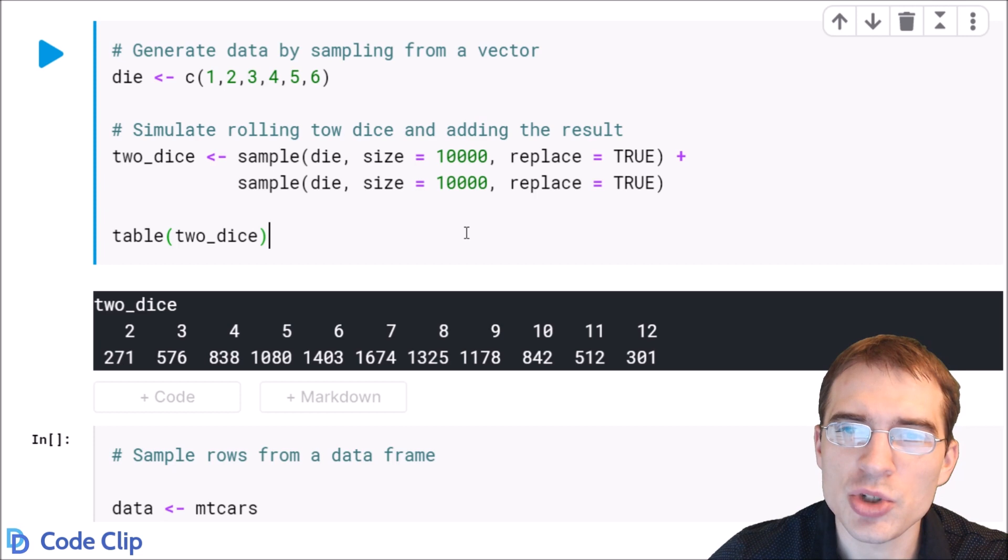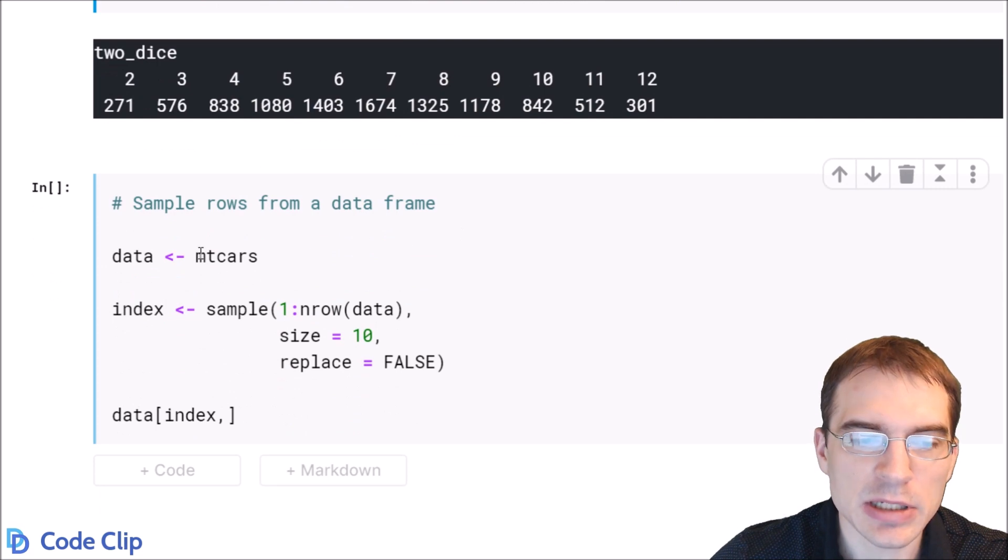Now we're going to show how you could use sampling to sample random rows from a data frame. So here we're going to take the mtcars data set. And then we're going to index into it using an index we're constructing using random number generation. So we're going to sample numbers between the range 1 and the length of the data set. We're going to sample 10 of those.